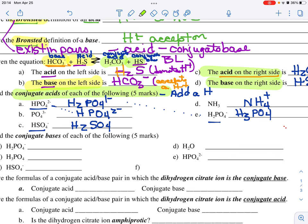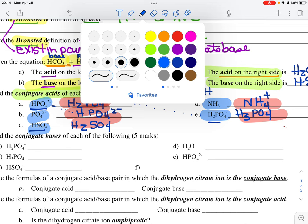What I've written here is the conjugate acids of each of the following. So the acids are these, and the bases for those pairs are the ones in blue.